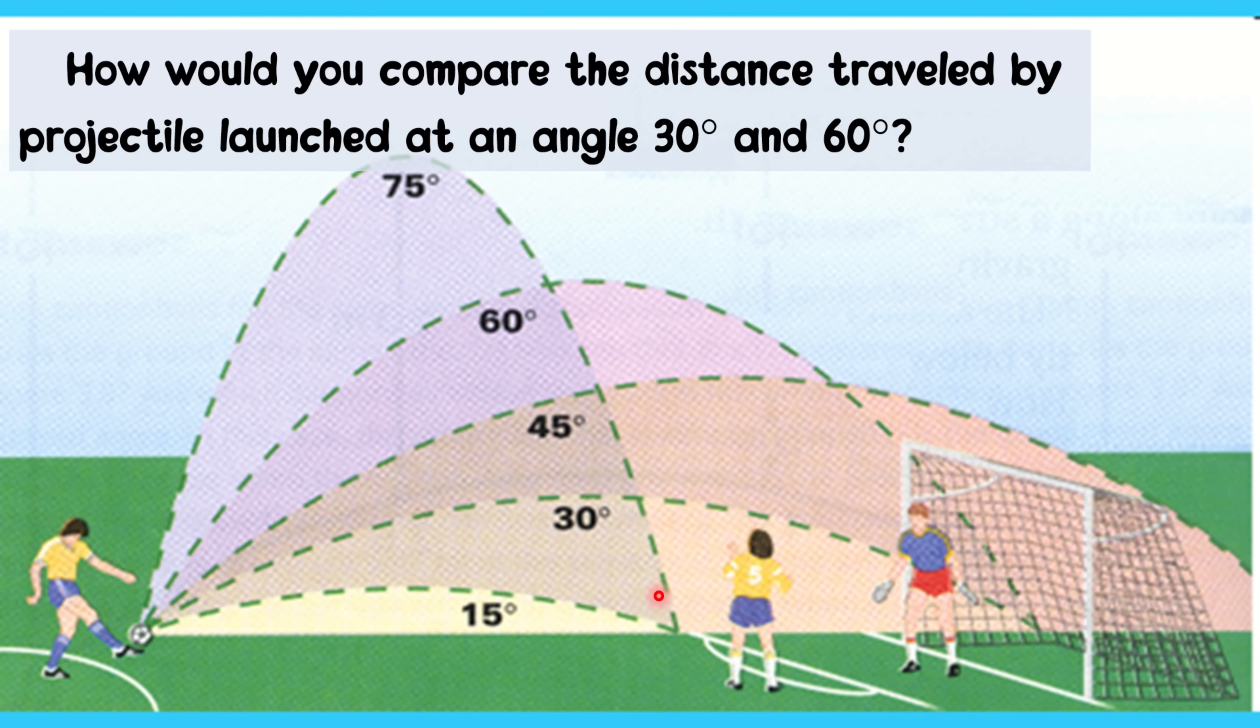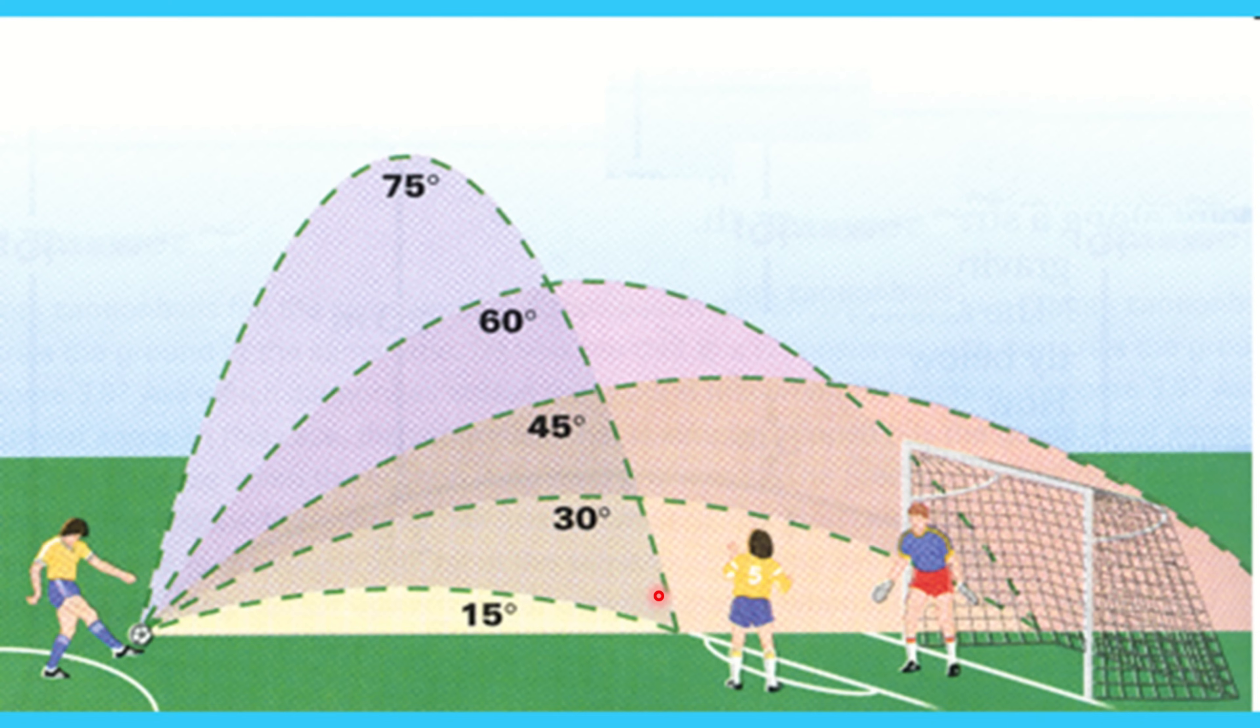This scenario that I have shown you is also an example of projectile motion launch at an angle. And these are the possible results if you launch an object at different angle. Take note class. Angle that is usually represented by theta is a numerical value in degrees expressing the orientation of a projectile to be thrown. To sum it up class,